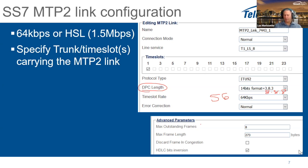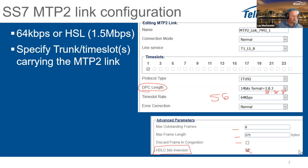Error correction is set to normal. The advanced parameters are things we never change. There was one case in Hong Kong where we had to invert the HDLC bit — HDLC is what encapsulates the MTP2 data — but normally this should not be checked. We don't change any of the advanced parameters.